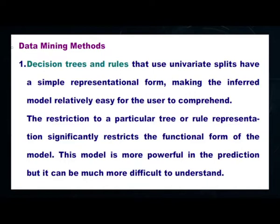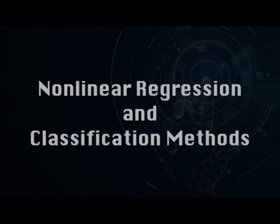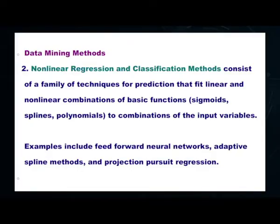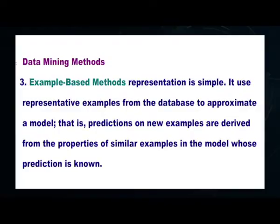This model is more powerful in prediction but can be much more difficult to understand. The second one is nonlinear regression and classification methods, which consist of a family of techniques for prediction that fit linear and nonlinear combinations of basic functions like sigmoids, splines, and polynomials to combinations of input variables. Examples include feed-forward neural networks, adaptive spline methods, and projection pursuit regression.